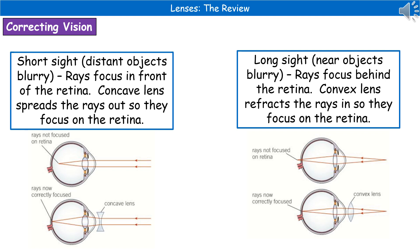The second problem with our sight is long sight. That means that up-close objects are blurry, but things in the distance are perfectly clear. The reason is that the rays of light are trying to focus behind the retina, so they're not able to focus on the retina at all. So this time we use a convex lens, and that's going to refract the light so that it focuses perfectly on the retina.